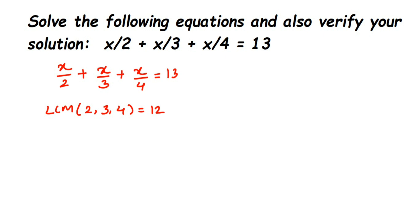We're going to make the denominator 12. So x/2: what should you multiply with 2 to get 12? It is 6, so multiply 6 in the numerator also. Plus x/3: with 3 what should you multiply to get 12? It's 4, so multiply 4 in the numerator too. Plus x/4: with 4 what should you multiply to get 12? It is 3, so multiply 3 in the numerator. This equals 13.